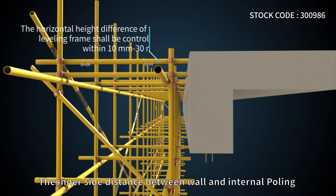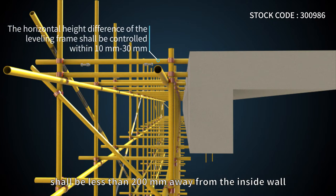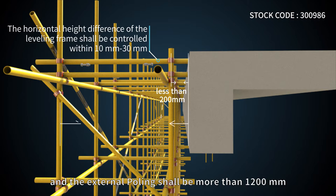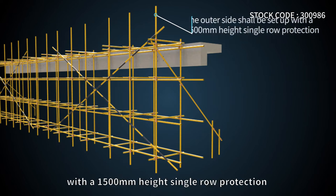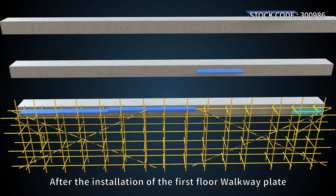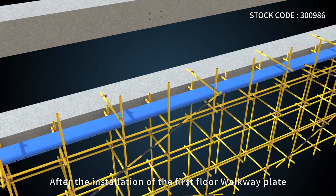The inner side distance between wall and internal polling shall be less than 200 mm from the inside wall, the external polling shall be more than 1,200 mm, and the outer side shall be set up with 1,500 mm height single-road protection. After installing the first floor walkway plate,